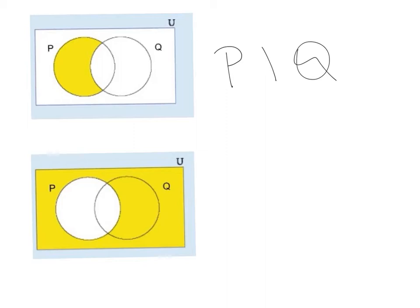The last one here: we have set P, and everything outside P is shaded. Everything outside P is named P complement. So P complement is the answer.